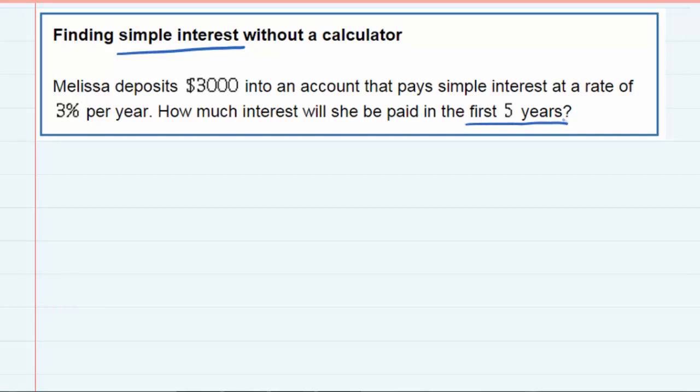So looking at the first year, I know that she has $3000 and she's getting 3% interest. So I need to start off by converting that 3% into a decimal.